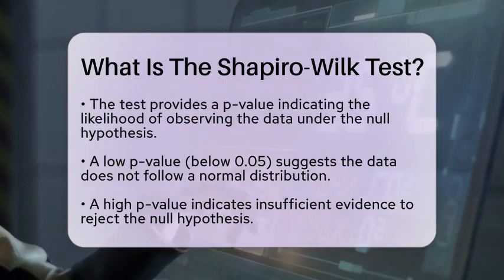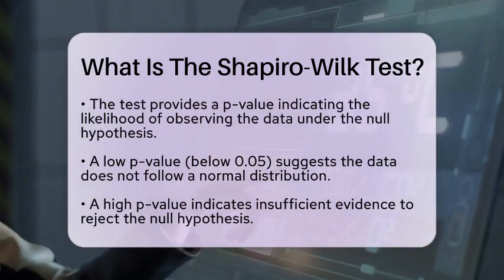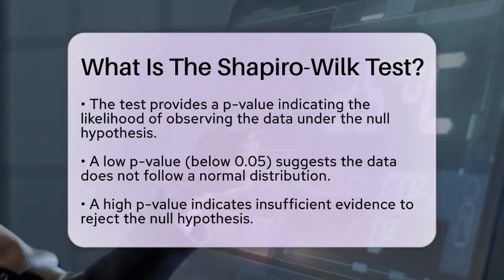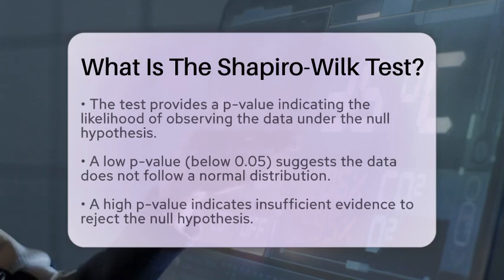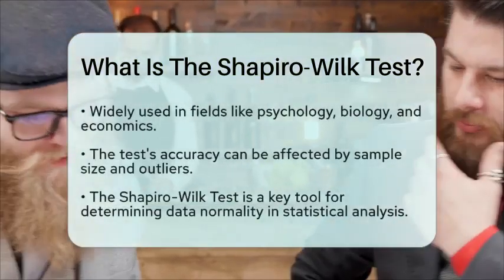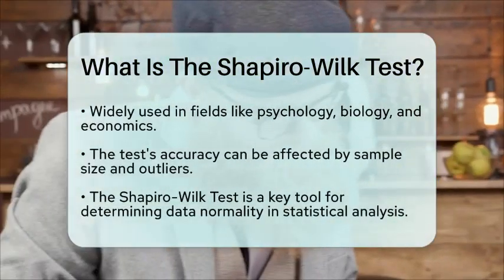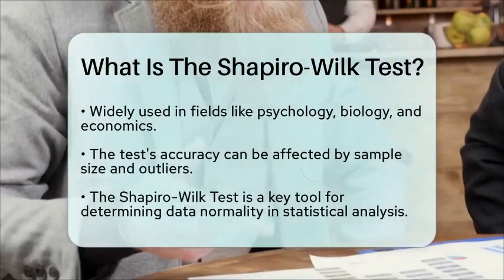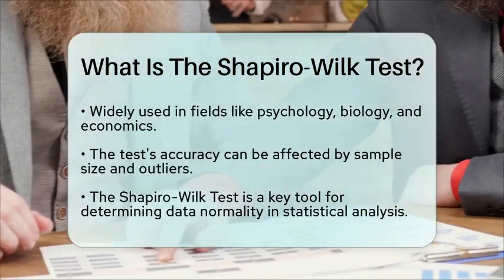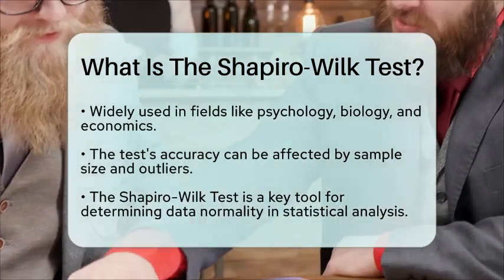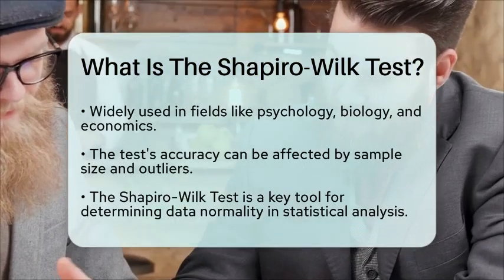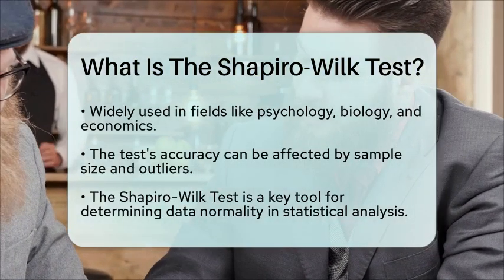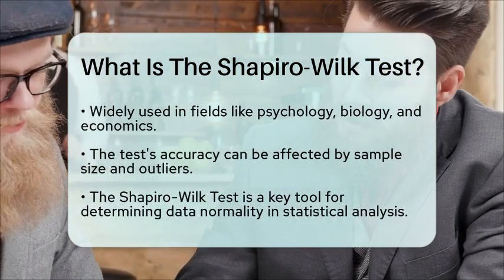In practice, the Shapiro-Wilk test is often used in various fields, including psychology, biology, and economics, where understanding the distribution of data is critical for accurate analysis. It is important to note that while the test is powerful, it is not infallible. Factors such as sample size and the presence of outliers can influence the results.